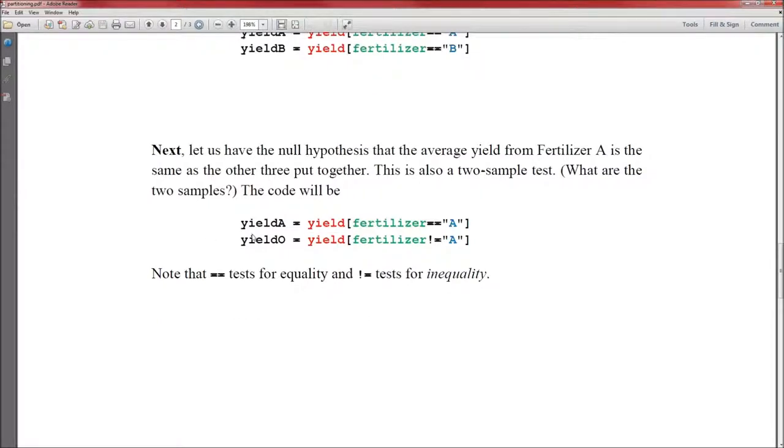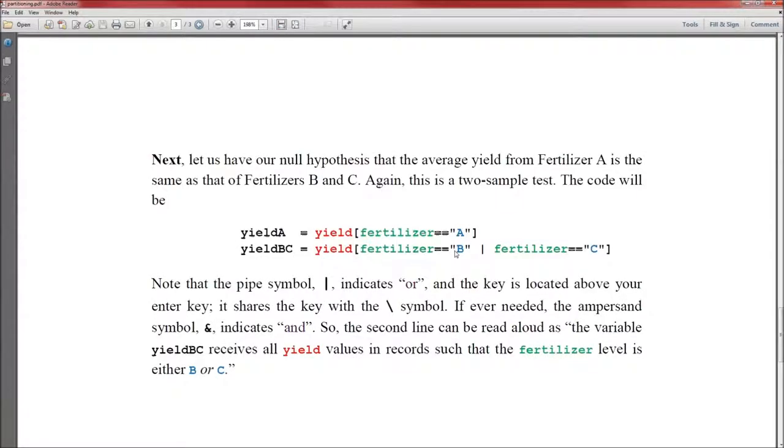Let's go ahead and go to here. Measurement variable, grouping variable, equal equal A, the level. Measurement variable, grouping variable, not equal to A. So that'll be for everything other than A. And here: measurement variable, grouping variable, level, or grouping variable, level.